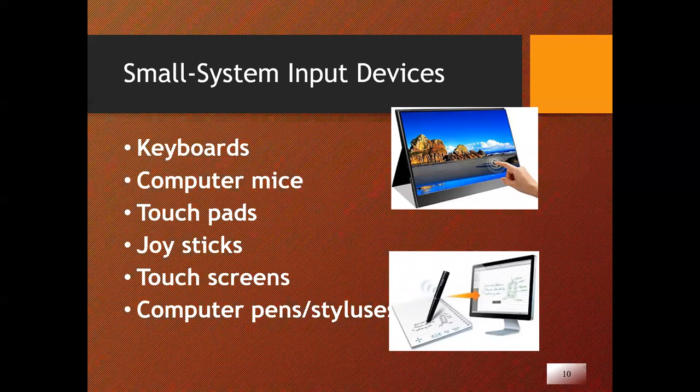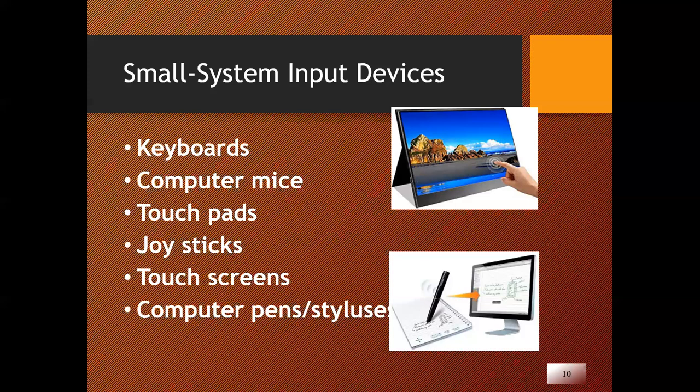Many specialized devices now help users input data to computer systems. Keyboards are perhaps the most common. Computer mice, touch pads, joysticks, and similar devices enable users to control a screen cursor, create graphic images, or select items from display menus. Touch screens, such as those on cell phones or computer tablets, enable users to make menu choices simply by touching a display screen with a finger or a stick. Computer pens or styluses permit users to enter data on a video screen.